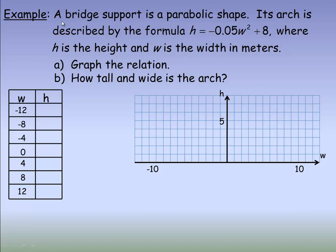In the next example, a bridge support has a parabolic shape. Its arch is described by the equation h equals negative 0.05 times w squared plus 8, where h is the height and w is the width from the center in meters. We're asked to graph this relation using a table of values.